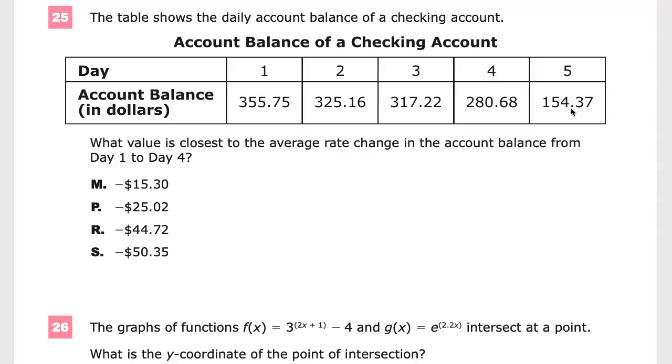What value is the closest to the average rate of change? That's key here. In the account balance from day one to day four. There's a couple of things that we're doing here that some of them make mathematical sense. Some of them are sort of like a horrible thing for them to do, and they're just trying to catch you.